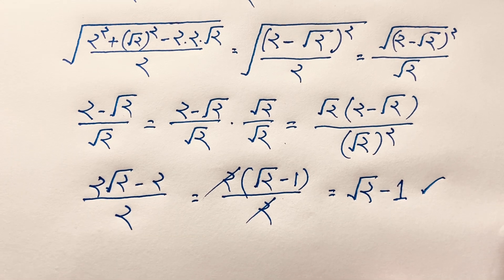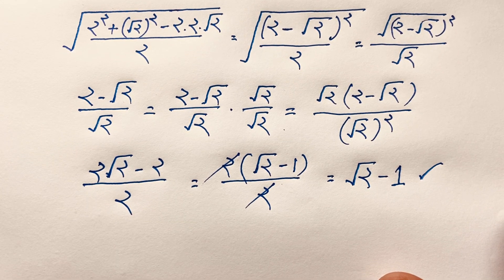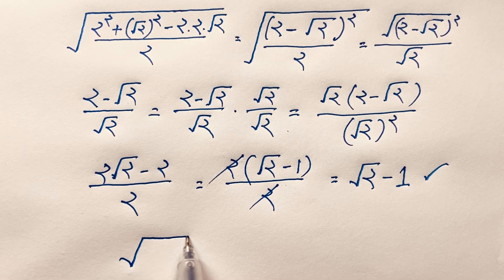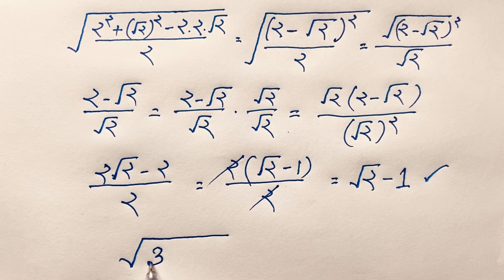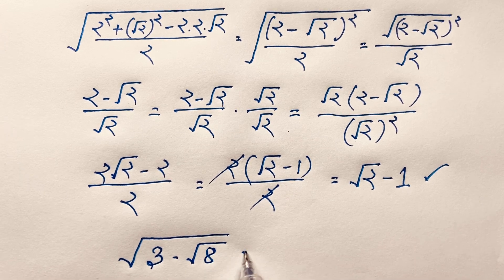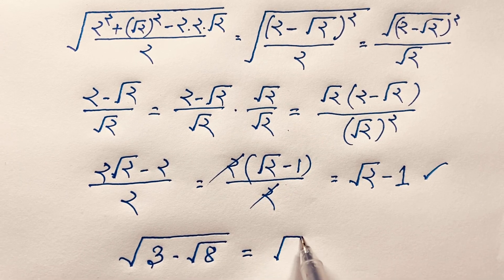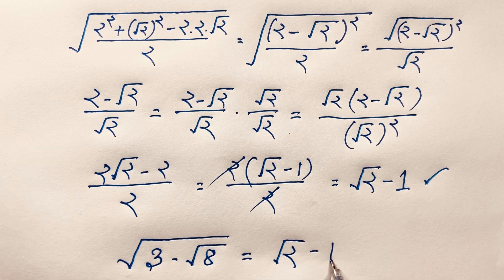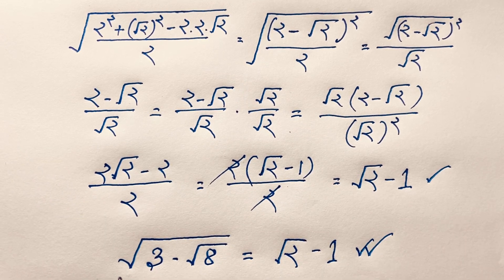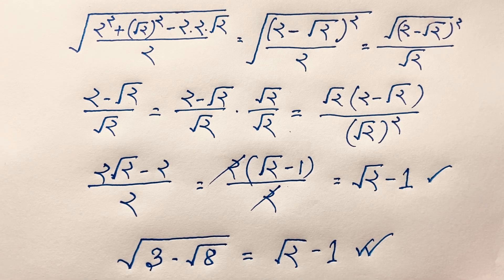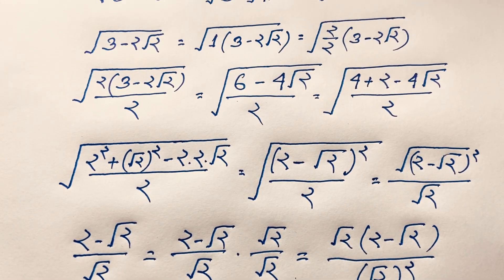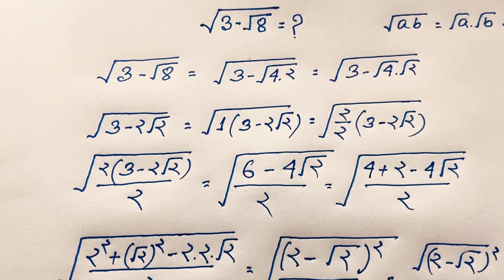So our question square root of (3 minus square root of 8) equals square root of 2 minus 1. This is our final answer. We have simplified this math Olympiad question. Thank you all — if you enjoyed this math problem, please subscribe to my channel for other interesting videos. Goodbye, take care everyone, have a good day!